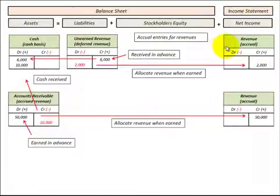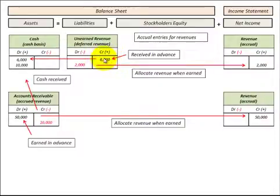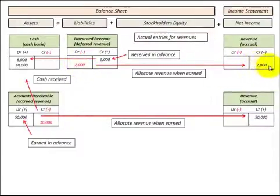Let's look at how we'd use accrual accounting to recognize revenue on our income statement. We can do it through a liabilities account or an asset account on our balance sheet. Looking at the liabilities account — our unearned revenue or deferred revenue — this is where we receive payment in advance of doing work. At the time we receive that payment, we credit or increase our unearned revenue account and debit or increase our cash account. Then when we actually do the work or provide the service, we debit or decrease our unearned revenue account and credit or increase our revenue account.